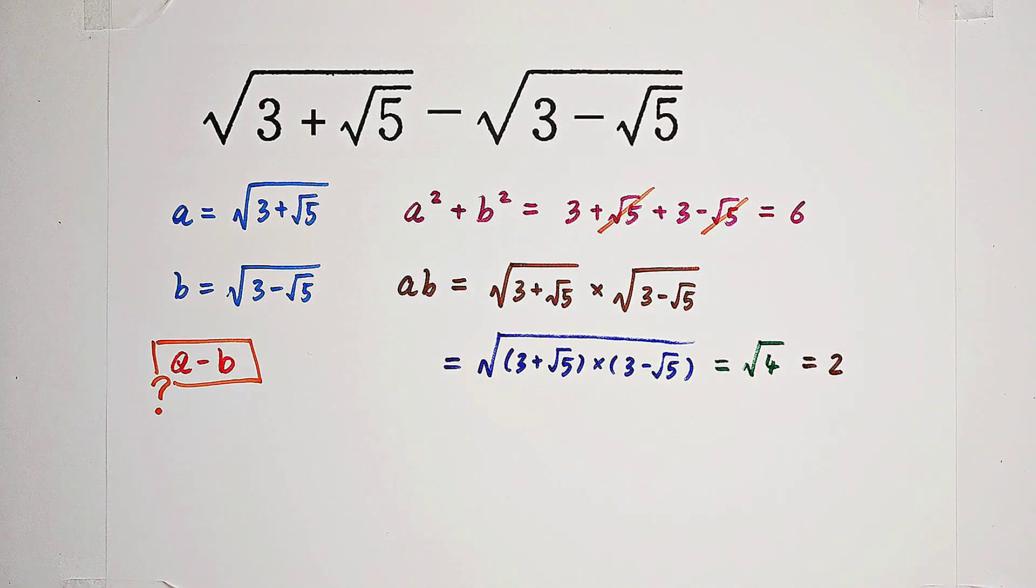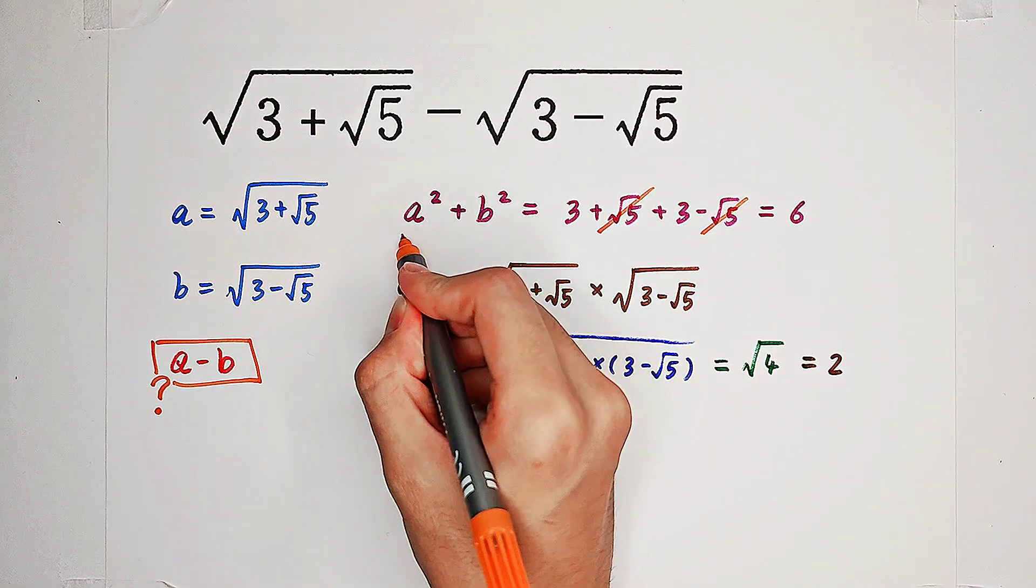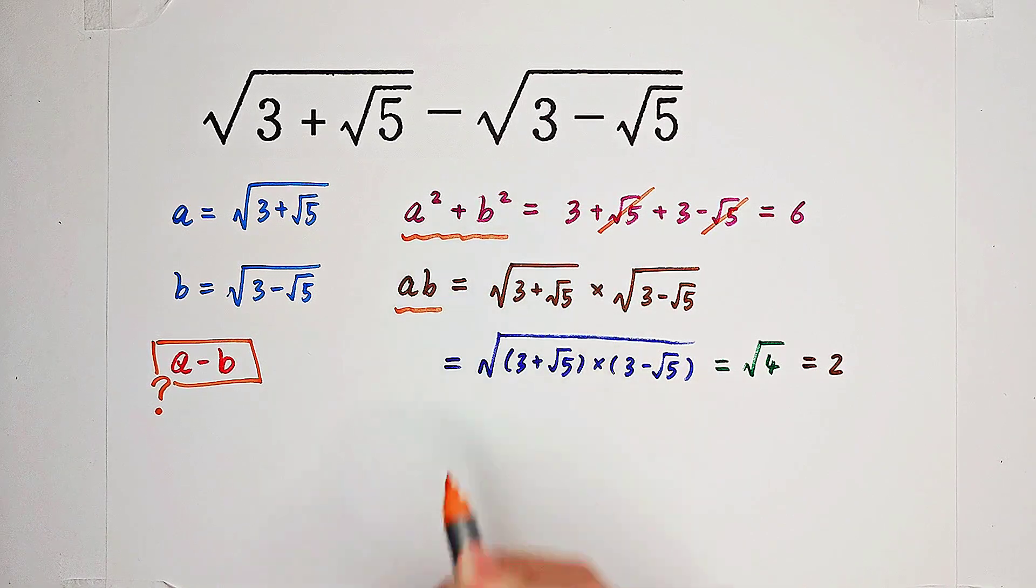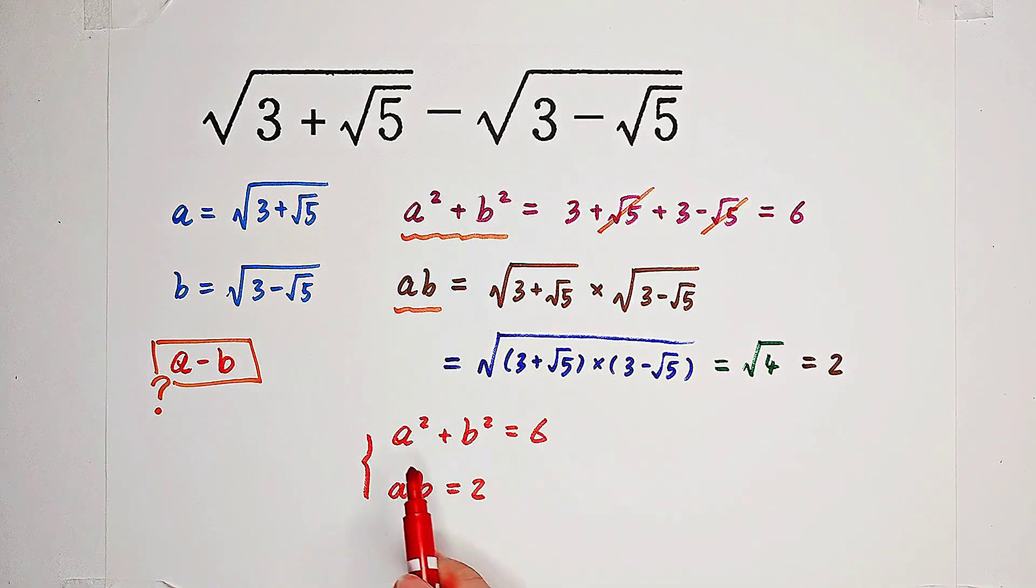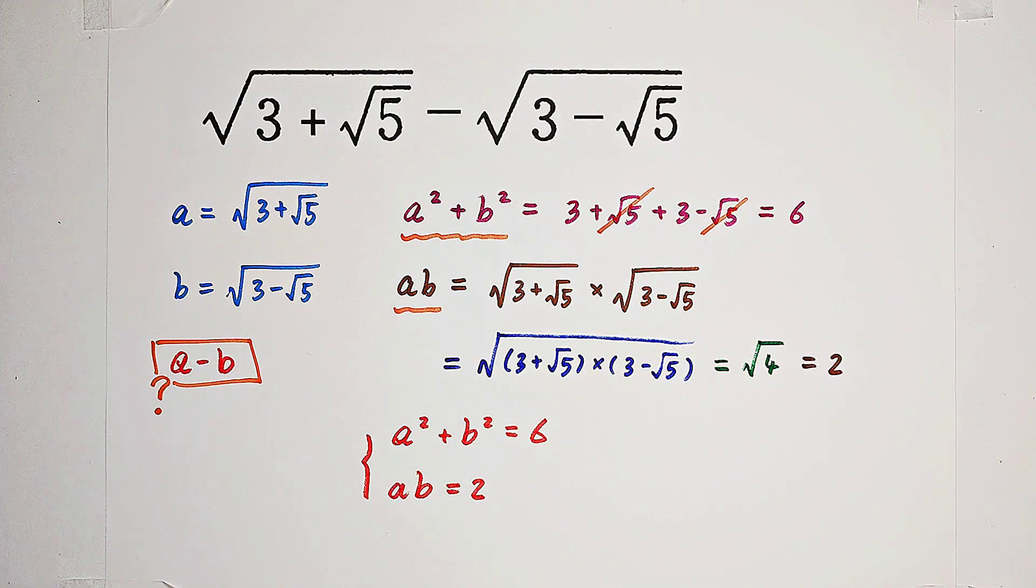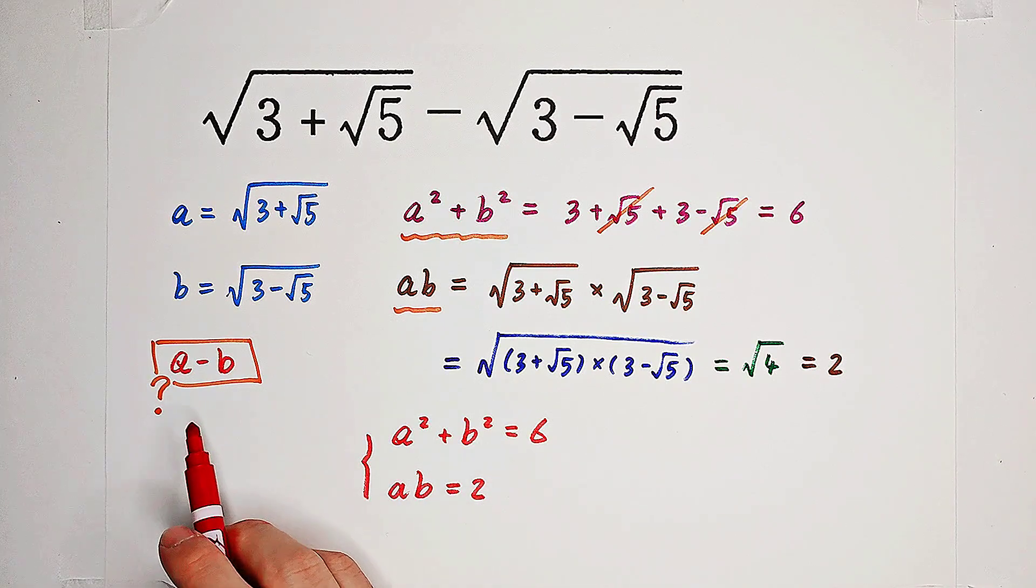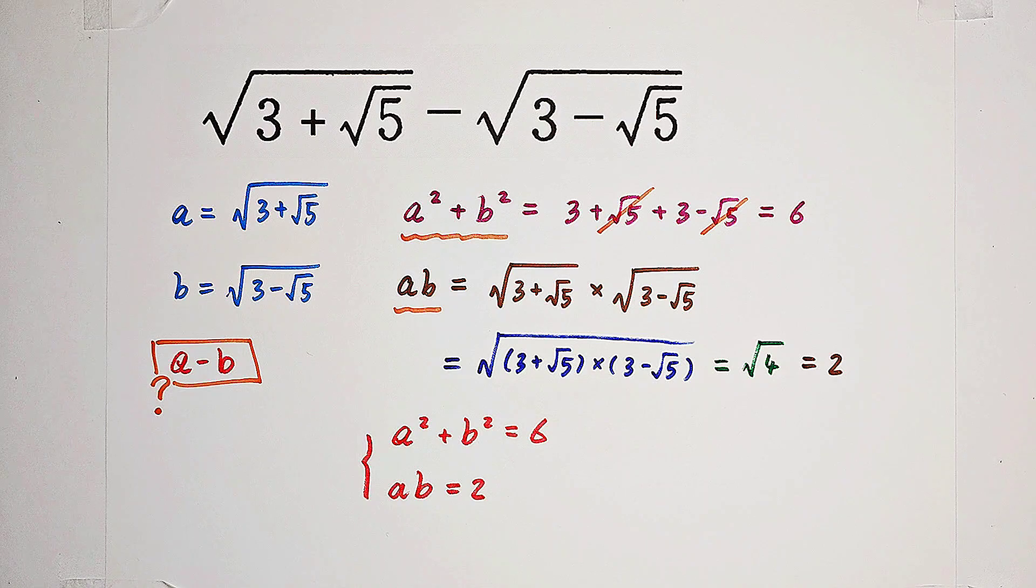So now, we've got a squared plus b squared and a times b. So what we've actually got is a system of equations. And now, we have to find a minus b. Easy. Look.